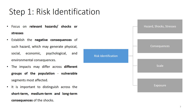Step one is risk identification. It is important for countries to focus on relevant shocks — hazards or stresses that actually affect your country. You need to establish the negative consequences across different dimensions: physical, social, economic, psychological, and environmental. The impacts differ across population groups because vulnerable groups will be more affected. It is also important to consider consequences in the short, medium, and long term.